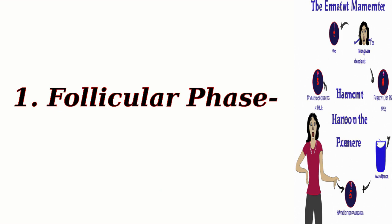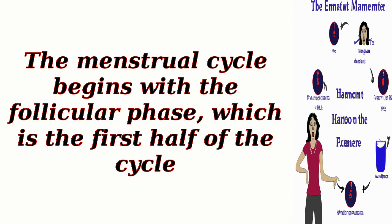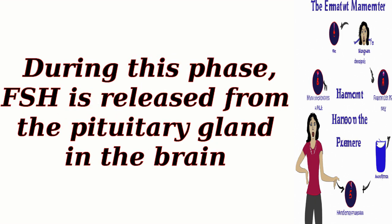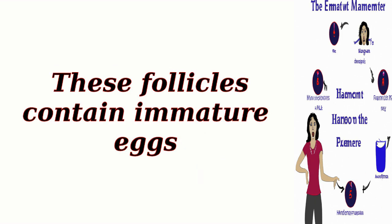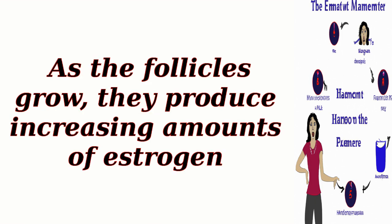1. Follicular phase. The menstrual cycle begins with the follicular phase, which is the first half of the cycle. During this phase, FSH is released from the pituitary gland in the brain. FSH stimulates the growth and maturation of ovarian follicles in the ovaries. These follicles contain immature eggs. As the follicles grow, they produce increasing amounts of estrogen.